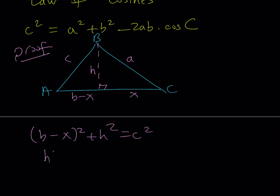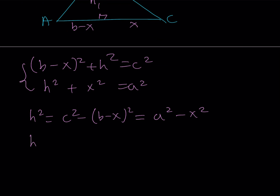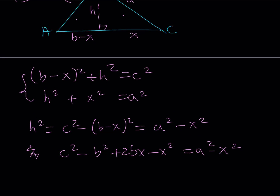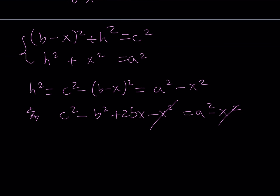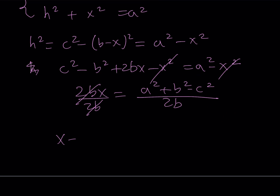And the other triangle gives me H squared plus X squared equals A squared. So I'm going to isolate H squared from both of these. H squared can be written as C squared minus the quantity B minus X squared, or as A squared minus X squared. From here we can expand: C squared minus B squared plus 2BX minus X squared equals A squared minus X squared. X squared cancels out, and from here we can isolate 2BX as A squared plus B squared minus C squared. Then dividing both sides by 2B gives us X in terms of A, B, and C.